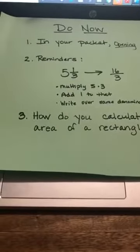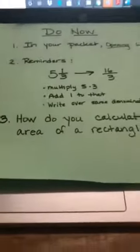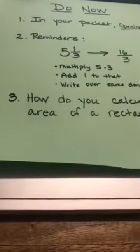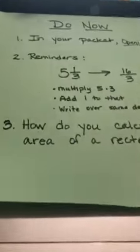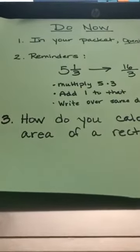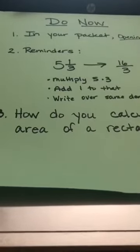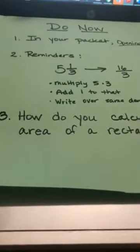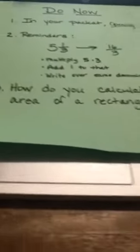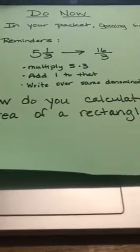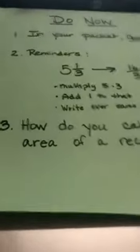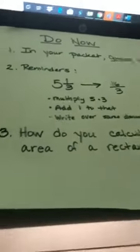People are still logging in so we'll give it another second. I know people were just getting out of the community meeting. There was something they asked you to cut out of the packet and we're going to go over that today — I have a model. My last Do Now question was: how do you calculate the area of a rectangle? That's a skill from fifth grade we're going to need today.